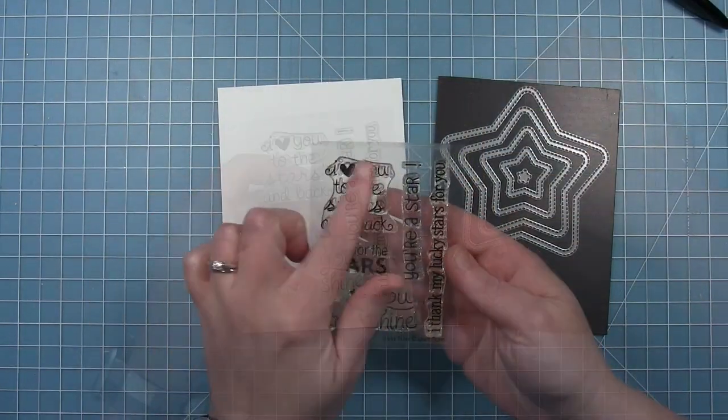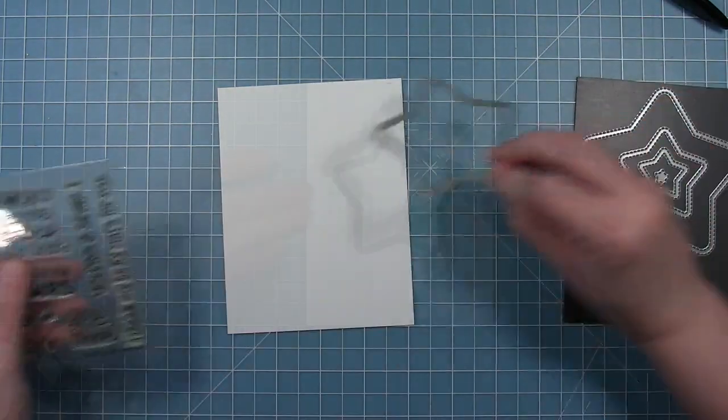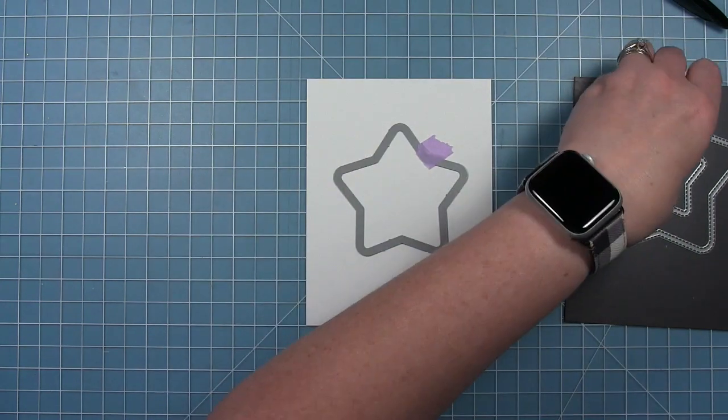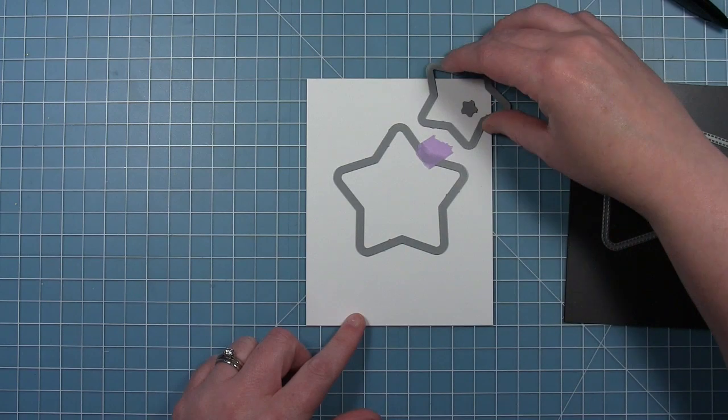So for my second card I'm going to use a sentiment from the Lucky Star Stamp Set and I'm going to frame it up in the center of my card with one of those just stitching stars around it. So you can see I'm taping that star in the center of this panel and that's where my sentiment is going to go.